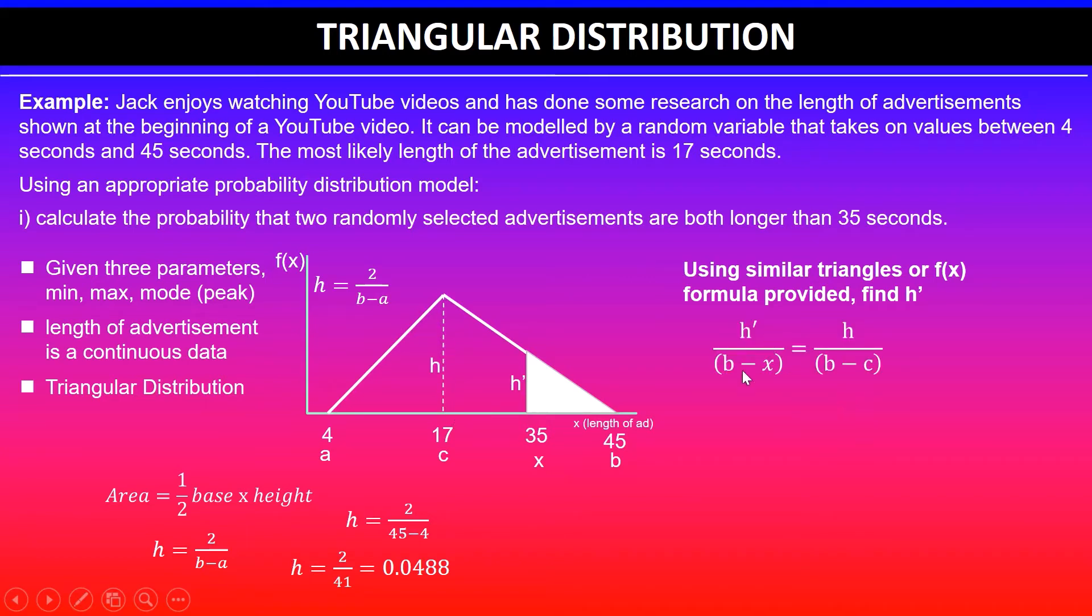So h dash over b minus x, because it's between b and x, so b minus x is equal to height h here over b minus c, because the base is from 17 to 45.